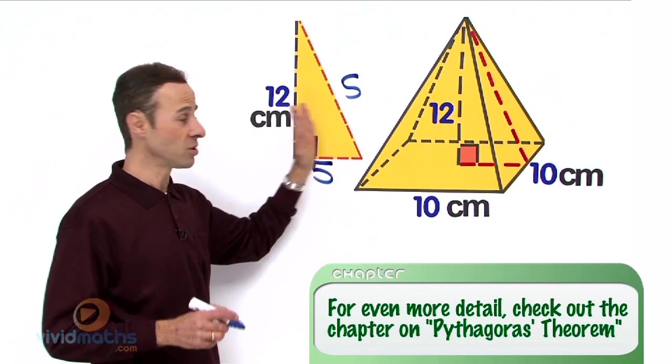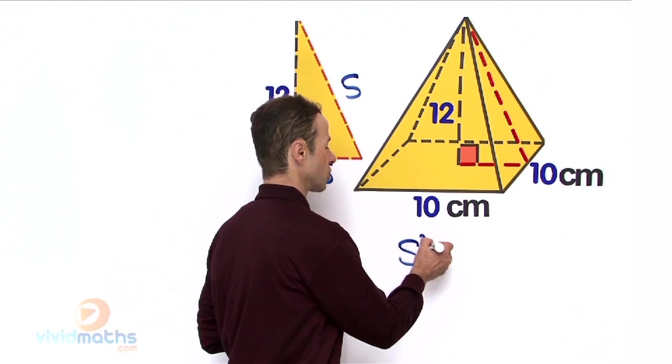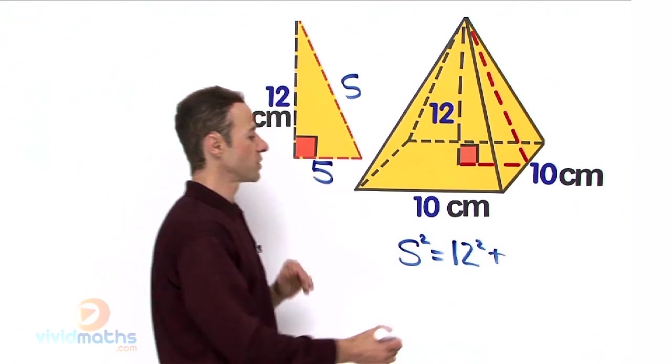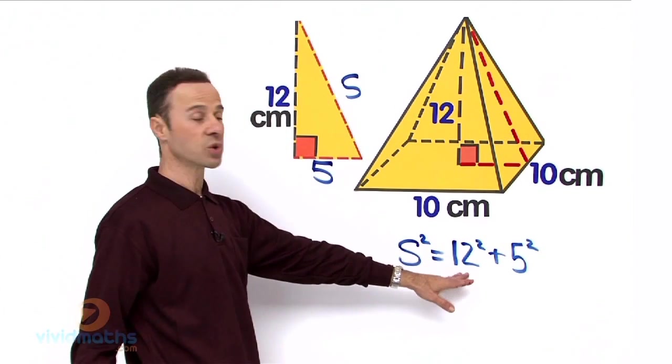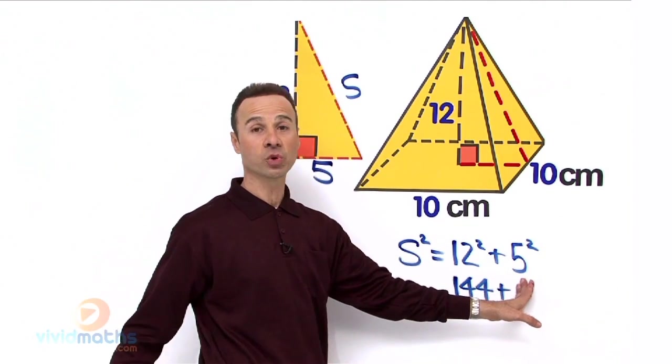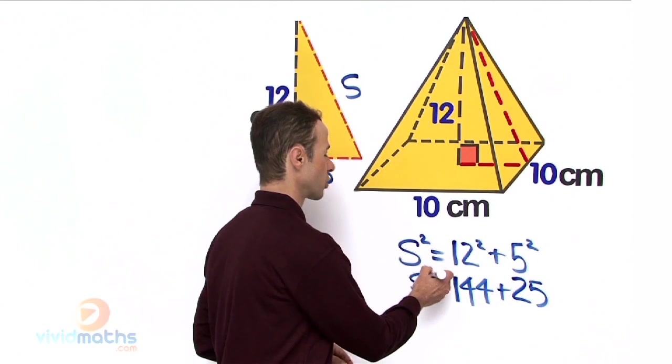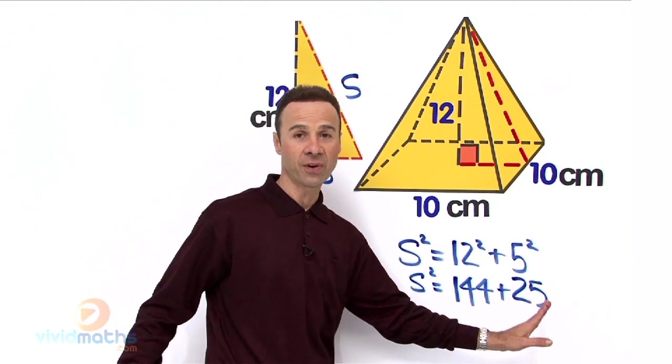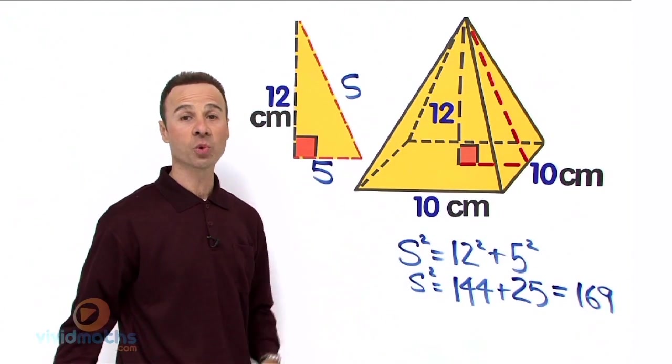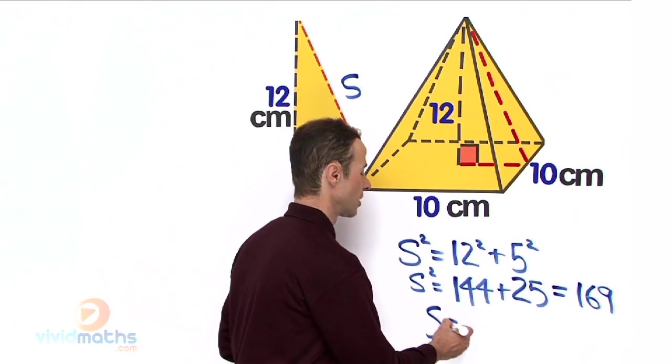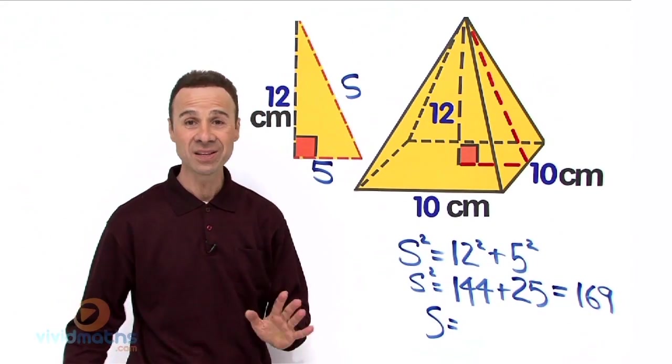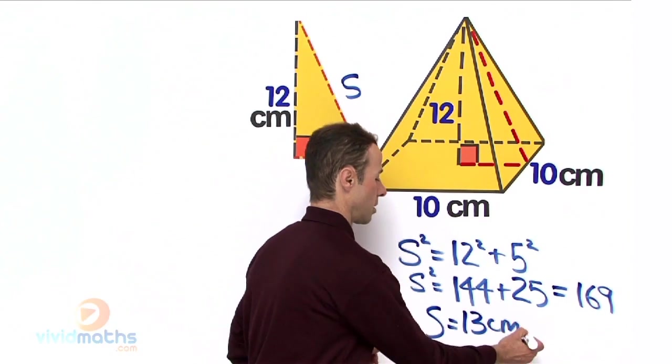So we are looking for the hypotenuse. Therefore it is going to be S squared, which is the slant height, equals 12 squared plus 5 squared. Let's work this out: 12 squared is 12 times 12, which is 144, and 5 squared is 25. Now that is S squared. Let's add them together: 144 plus 25 together, all together, total is 169. What we need to do with that 169 is to square root. Therefore, S, the slant length, which is right across there, the square root of 169 is 13 cm.